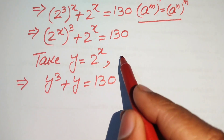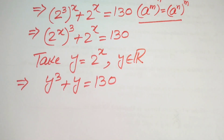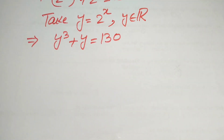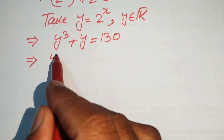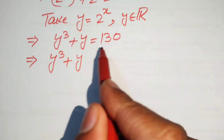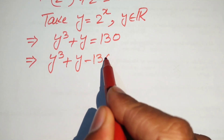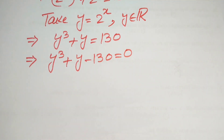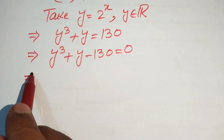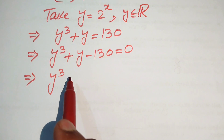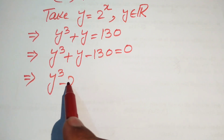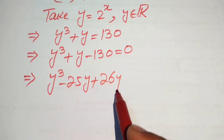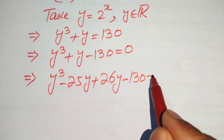Since we are solving for real values of x, y must also be a real number. This is a cubic equation, and we solve it by factorization. Moving 130 to the left side gives y cubed plus y minus 130 equals zero. We break the middle term y as minus 25y plus 26y, giving y cubed minus 25y plus 26y minus 130 equals zero.